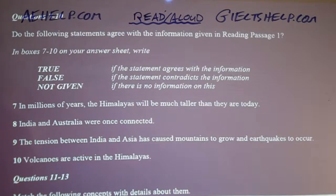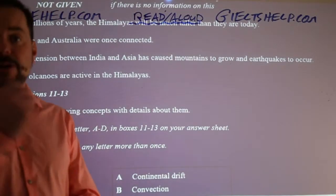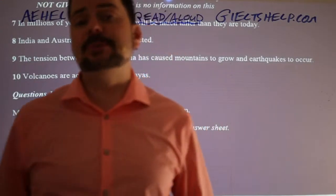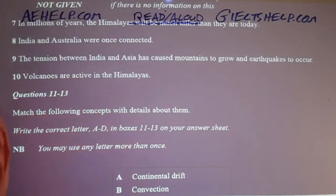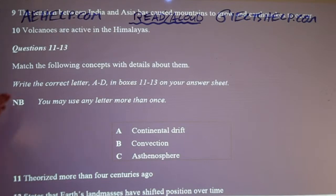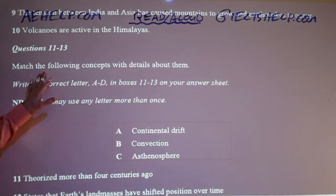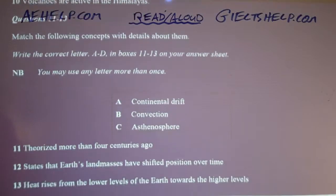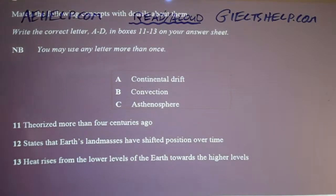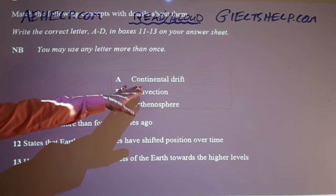Visualization absolutely helps to create a mental log as you're imagining — because you can visualize as this mountain climber the steps that happened with the creation of the Himalayas. We also have a matching information question type with three concepts: A — continental drift, B — convection, and C — asthenosphere. If you know what these mean, great. If you don't, do not panic — they're probably defined in the text.